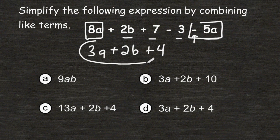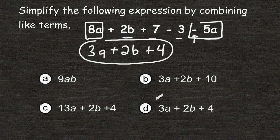So this is the simplified version of the given expression, and the choice that says 3a plus 2b plus 4 is choice D.